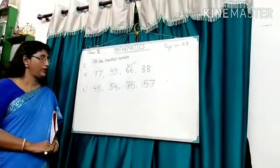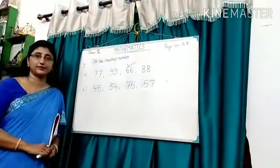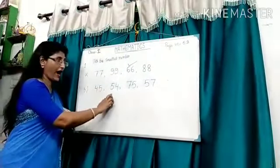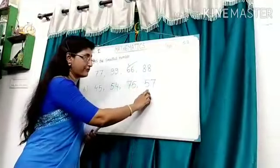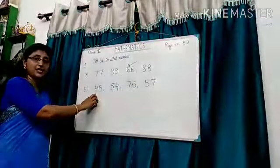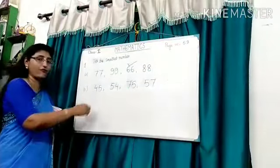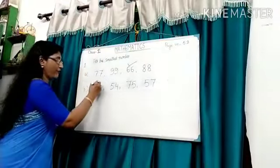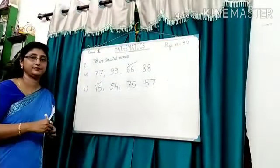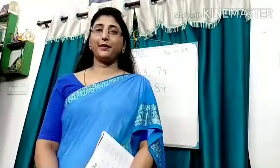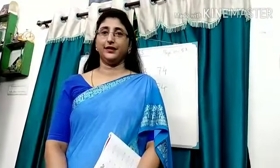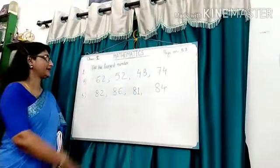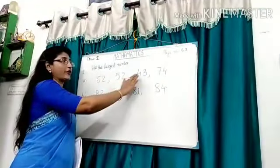Next example. Here the numbers are 45, 54, 75, 57. All are two digit numbers, so see the tens place first. Here the numbers in tens place are 4, 5, 7 and 5. 4 is the smallest in all numbers. So, 45 is the smallest number. Take the smallest number, 45.